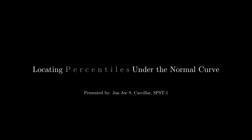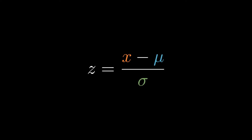This discussion is all about locating percentiles under the normal curve. The best way to start is to recap some of the concepts on how to derive z-scores. To get the z-score, we need our raw score, subtract the mean of the distribution where it belongs,